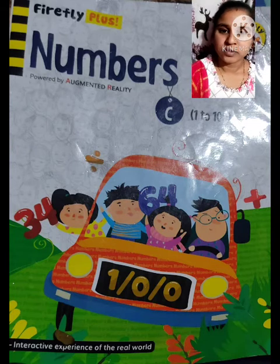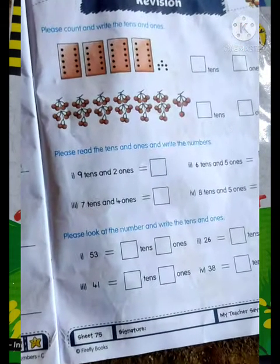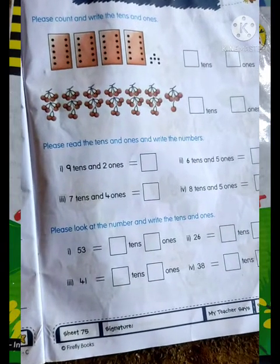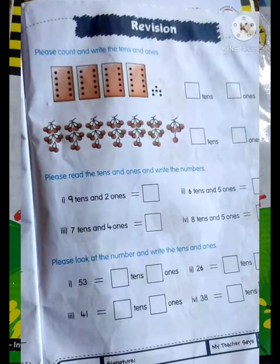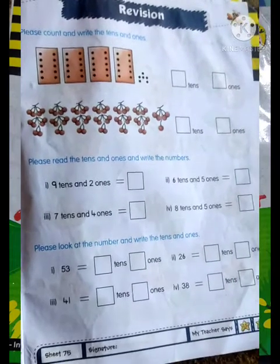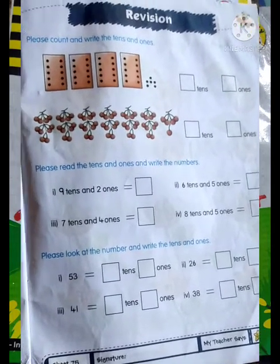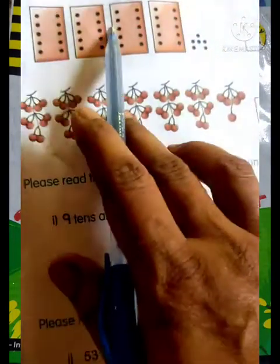Open your textbook, okay friends. Open your textbook sheet number 75. Today we will learn about revision. So first is please count and write the tens and ones.